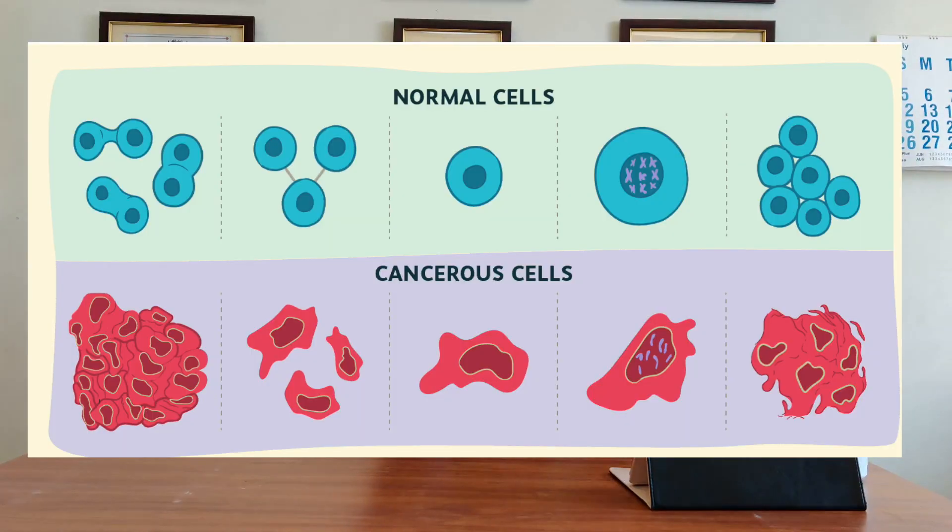Using these treatments in combination or sequentially, we can treat this disease. Targeted therapy is a special treatment that kills cancer in a specific, targeted way. For example, if a cancer cell has a special DNA change not present in normal cells, targeted therapy exploits that difference. The side effects are generally lower than conventional treatment, and there is good benefit.